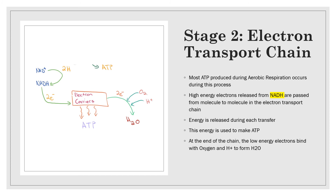In the electron transport chain, NADH donates its high-energy electrons to electron carrier molecules. These electrons pass along the chain, and at each transfer they release energy in the form of ATP. With two electrons being donated and the chain having many carriers, this is where the bulk of ATP is made in aerobic respiration. Once the electrons have passed along all the carrier molecules, they bind with oxygen and the reserve protons to form water — which is where the water in the aerobic respiration equation comes from.